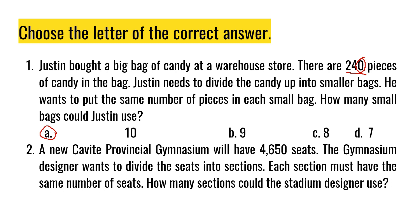Number 2: A new Cavite Provincial Gymnasium will have 4,650 seats. The gymnasium designer wants to divide the seats into sections. Each section must have the same number of seats. How many sections could this stadium designer use? A) 5, B) 4, C) 3, D) 2.